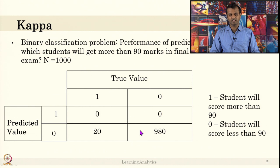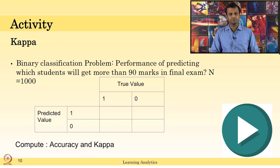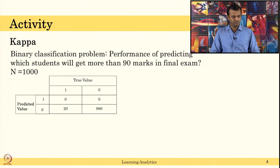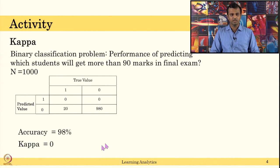So the classifier did simple classification, classifying everything into one majority class. In this problem, compute accuracy and kappa and infer why you get those values. After writing down your answer, please resume to continue. The accuracy is 98% because 980 out of 1000 students were classified correctly, and kappa is 0.